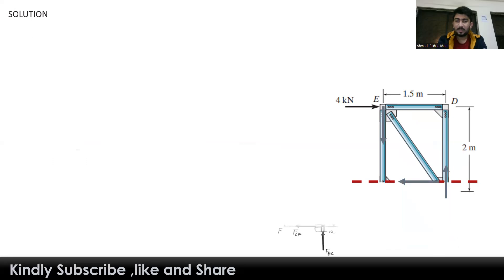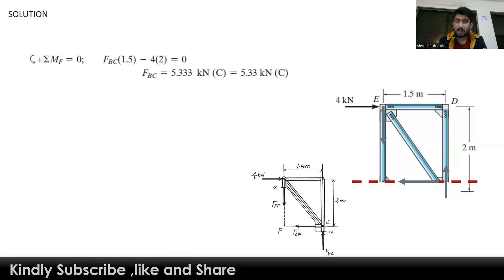Now we write the free body diagram. We use equilibrium conditions to find these three forces. First, if we apply the summation of moments at point F, the moment arm lies on members AF and CF. The remaining forces are 4 kilonewtons and the force in member BC. The 4 kilonewton force has a perpendicular distance of 2 meters from point F and rotates the truss clockwise, so it is negative.